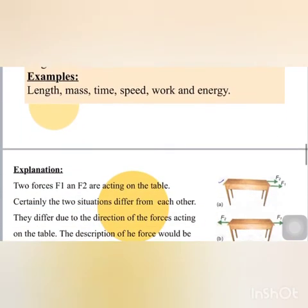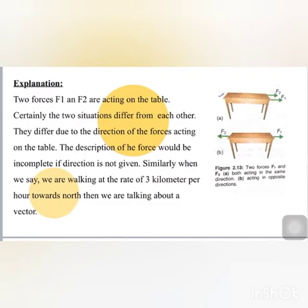Here is an explanation: two forces F1 and F2 are acting on a table. In figure A, forces F1 and F2 are acting in the same direction. In figure B, both forces are acting in the opposite direction. The two situations are certainly different from each other. This is very important when we are talking about two forces acting on an object.